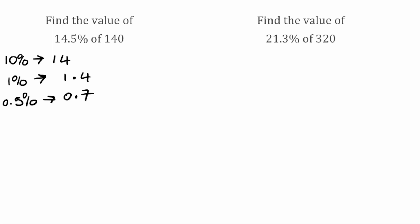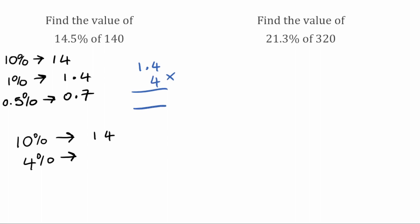We've now got all the relevant percentages we need, so we're going to use multiples of these to make up our 14.5%. We're keeping our 10%, which was equal to 14. Then I need to find what 4% would be — all we do is take our 1%, which was 1.4, and multiply that by 4. So 4 times 4 is 16, carry the 1; 4 times 1 is 4, add the 1 is 5 — that gives us 5.6.